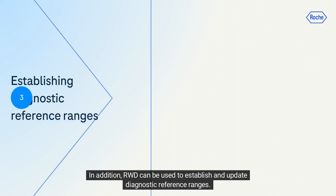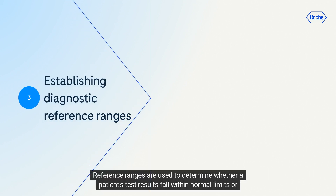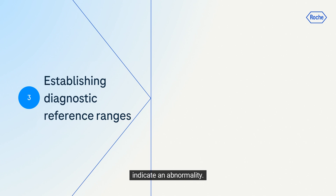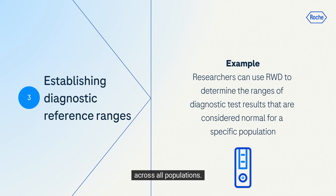In addition, RWD can be used to establish and update diagnostic reference ranges. Reference ranges are used to determine whether a patient's test results fall within normal limits or indicate an abnormality. By analyzing lab results across patient populations, researchers can determine the range of test results considered normal for specific groups of patients, ensuring that the diagnostic is effective across all populations.